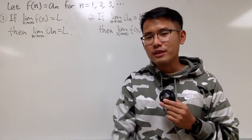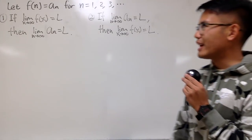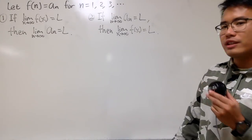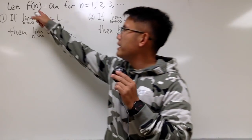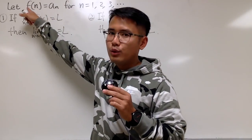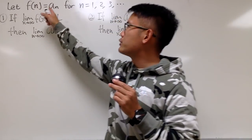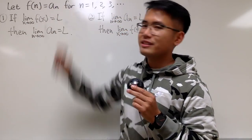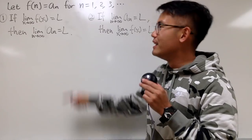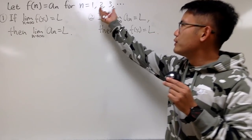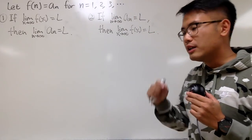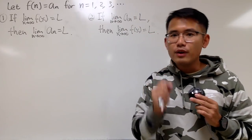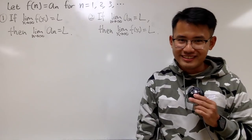Here we are talking about function and sequence. The connection between the function and sequence is that if you plug in n into the function, you actually get the sequence. So n is good for 1, 2, 3, 4, 5, and so on — just positive whole numbers.